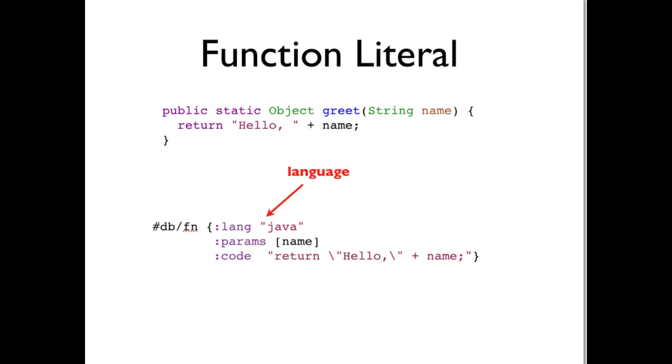In addition, in a Datomic database function, you have a specification of language. That is because Datomic functions can be implemented in more than one language, currently Java or Clojure.